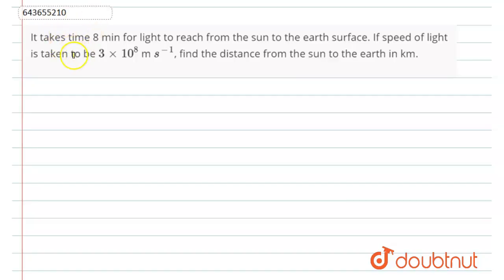Hello everyone, welcome to this video. In this video, we are going to discuss this question: It takes eight minutes for light to reach from the sun to the earth surface. If speed of light is taken to be 3 × 10^8 meters per second, find the distance from the sun to the earth in kilometers.